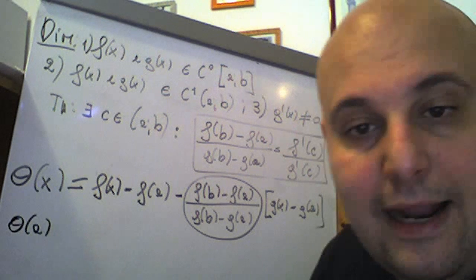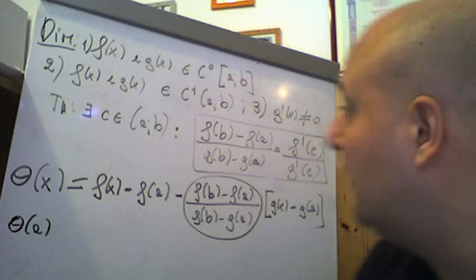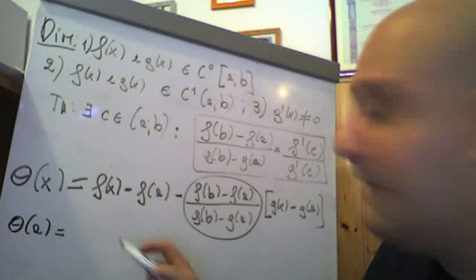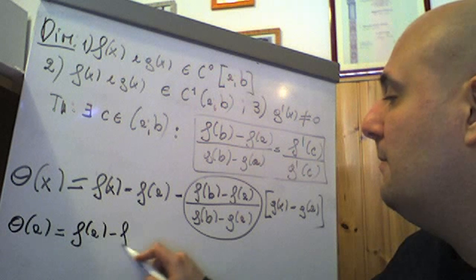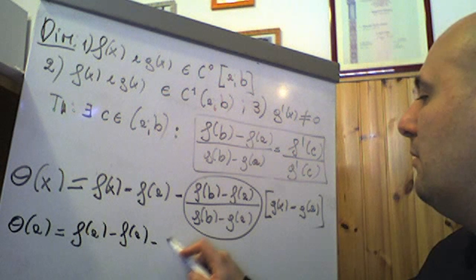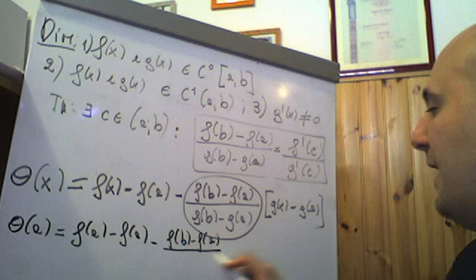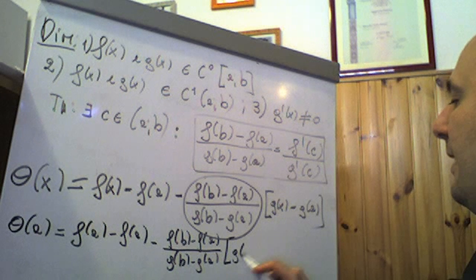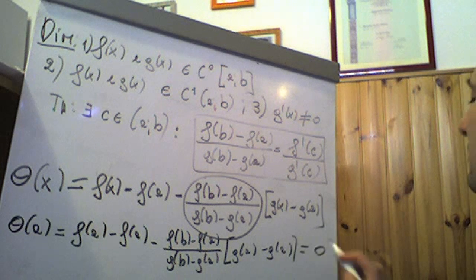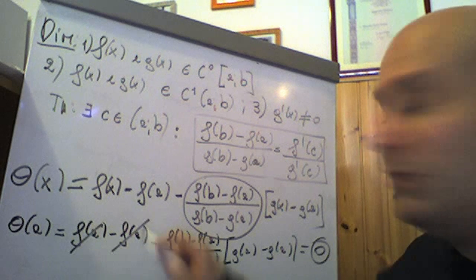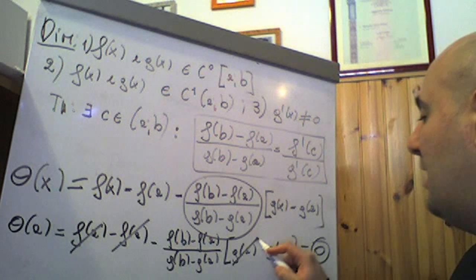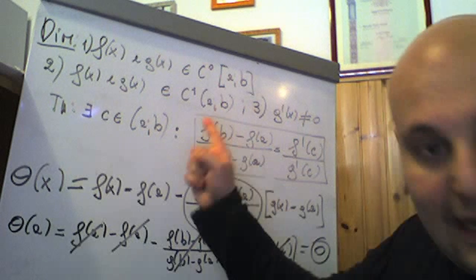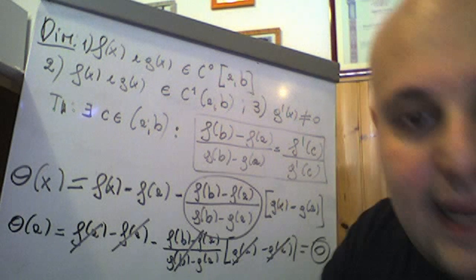A questo punto calcoliamo θ(a) e θ(b). θ(a) significa mettere al posto di x la costante a. Avremo f(a) − f(a) meno il rapporto costante [f(b)−f(a)] / [g(b)−g(a)] moltiplicato per g(a) − g(a). Questo è 0, perché f(a) − f(a) si annullano, e g(a) − g(a) si annullano: 0 meno 0 = 0. Quindi θ(a) = 0.